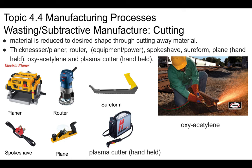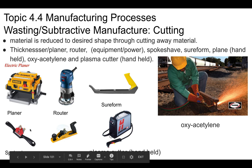A planer feeds wood through and cuts away the surface. A router is used for edges of wood and can make a curved edge. There's also a tool called a sure form — essentially like a cheese grater — with teeth on the bottom that shave away little bits of wood, plastic, or whatever material you're forming. A spoke shave has two handles; you pull it across a piece of wood and it shaves off a thin piece.